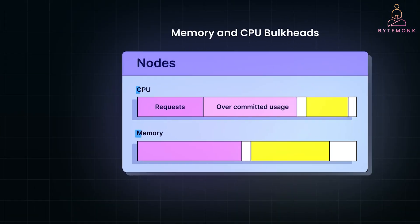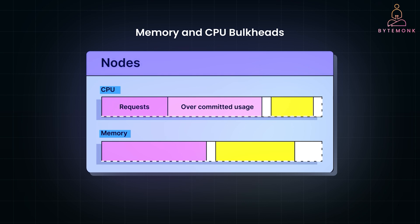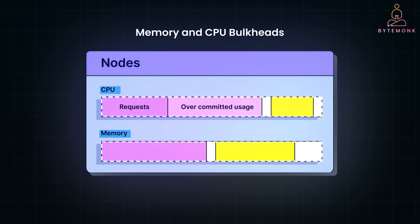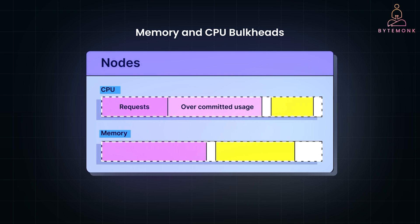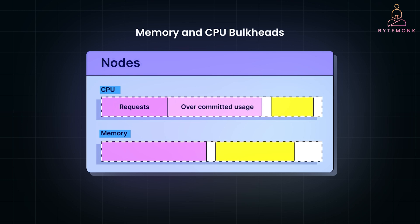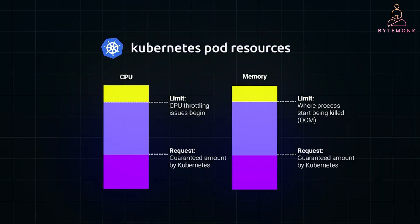Similarly, you can use memory and CPU bulkheads to prevent resource-heavy services from starving others of essential resources. Without bulkheads, a memory-heavy service could consume all the available memory, leading to system crashes. You can use resource limits to allocate specific CPU and memory quotas to each service. In containerized environments like Kubernetes, you can enforce these limits using resource requests and limits to prevent one service from hogging all system resources.